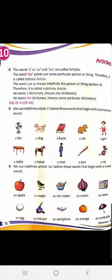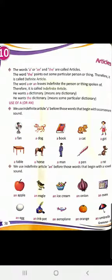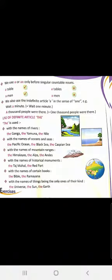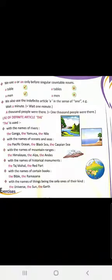We use indefinite article A before words that begin with a consonant sound — a fan, a dog, a book, a cat, and so on. We use indefinite article AN before words that begin with a vowel sound. We use A or AN only before singular and countable nouns. We also use A in the sense of 'one' — like 'wait a minute' meaning one minute, or 'a thousand people were there' meaning one thousand. Now let us see THE used with names of rivers — the Ganga, the Yamuna, the Nile — with names of oceans and seas, mountain ranges, historical monuments, certain books, and things that are the only ones of their kind — the universe, the sun, the earth.